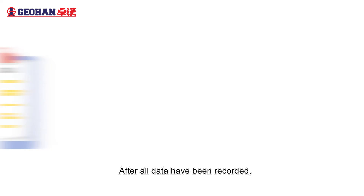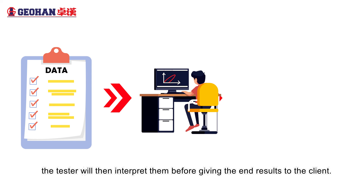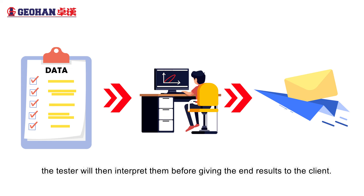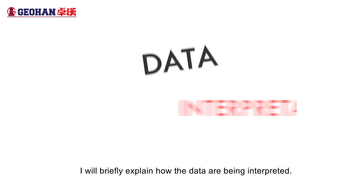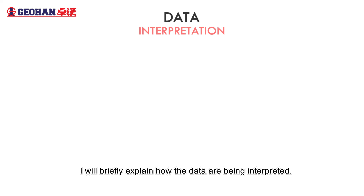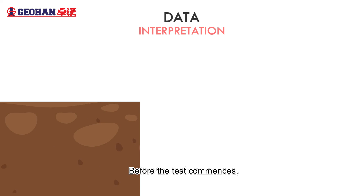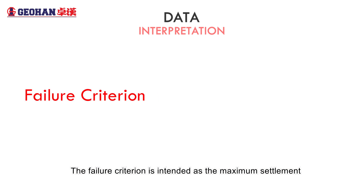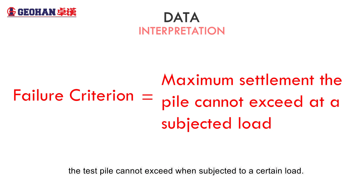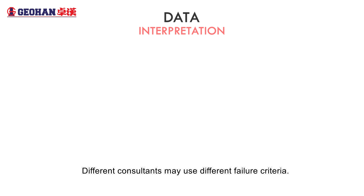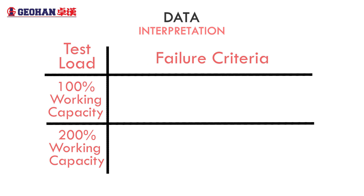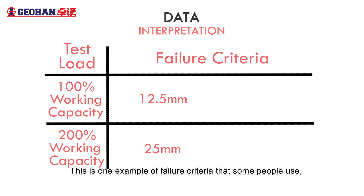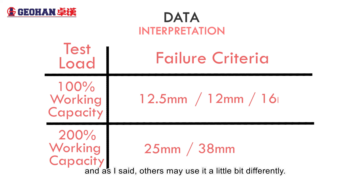After all data have been recorded, the tester will then interpret them before giving the end results to the client. Before the test commences, the failure criterion will be determined. The failure criterion is defined as the maximum settlement the test pile cannot exceed when subjected to a certain load. Different consultants may use different failure criteria. This is one example of failure criteria that some people use, and others may use it a little bit differently.